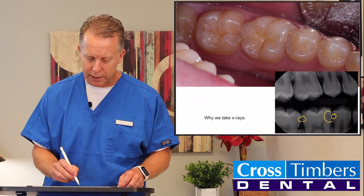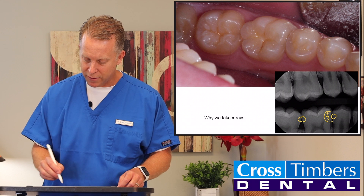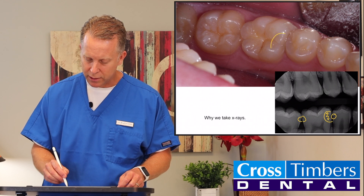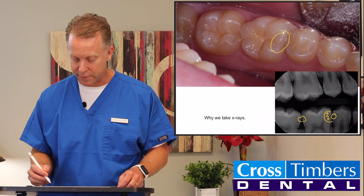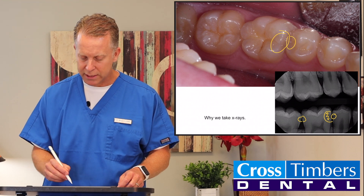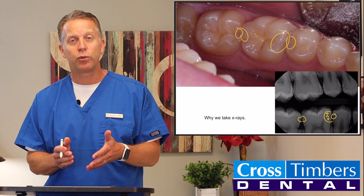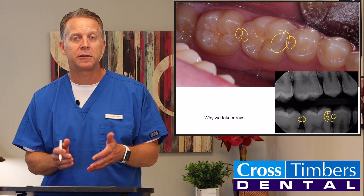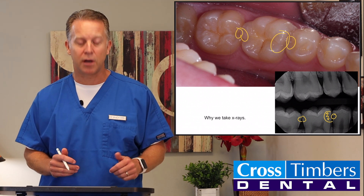Looking at those teeth — the really big cavity, which is this one right here, corresponds to this tooth. If you look at that tooth, it looks perfectly fine. The other cavities are between the teeth, right where the floss goes, right between those two teeth. That is where we find interproximal cavities, and we can only catch those on an x-ray.